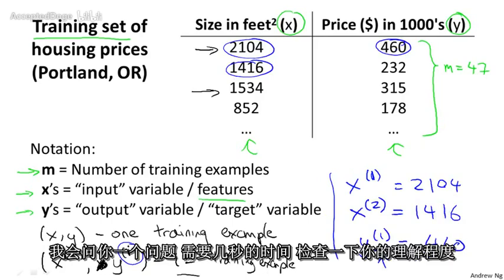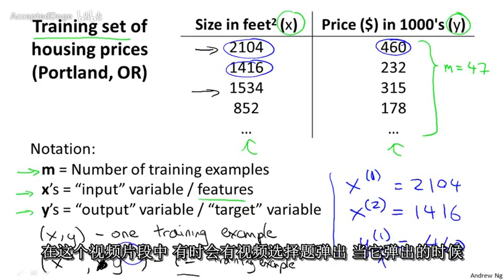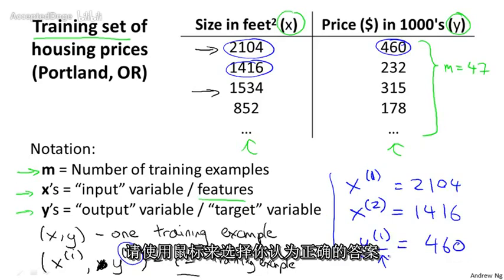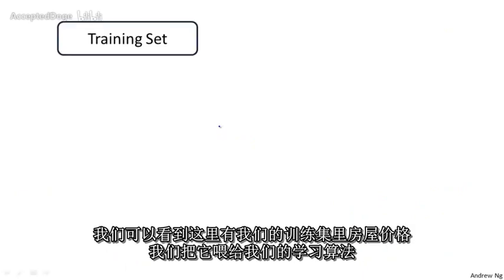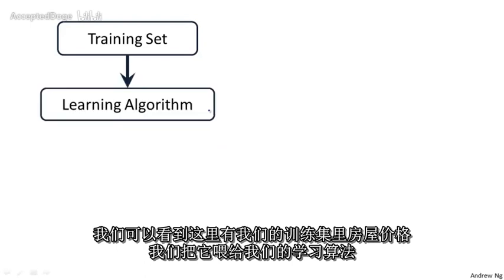Occasionally I'll ask you a question to let you check your own understanding — a multiple choice question will pop up in the video, and please use your mouse to select what you think is the right answer. We've defined what a training set is, and here's how a supervised learning algorithm works: we start with a training set, like our training set of housing prices, and we feed that to our learning algorithm.